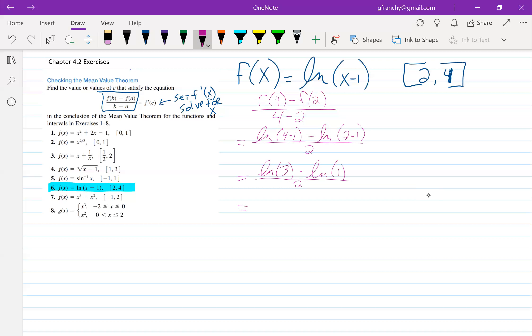And the natural log of one is going to be zero. So that means we get log of three over two. So that is our average rate of change over the closed interval from four to two.